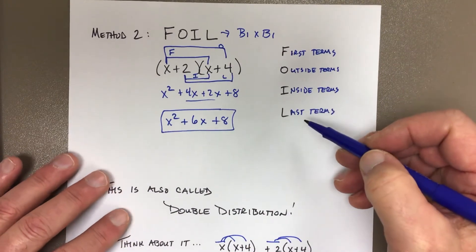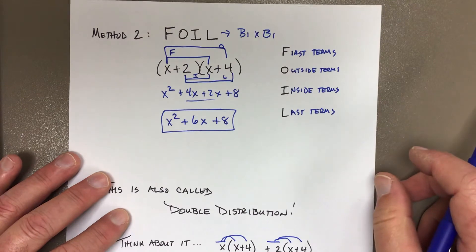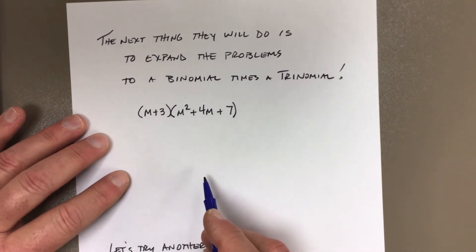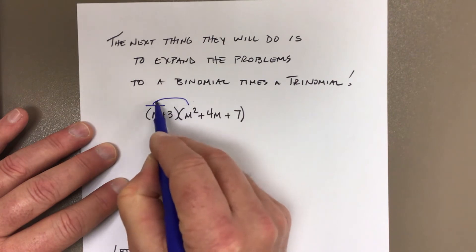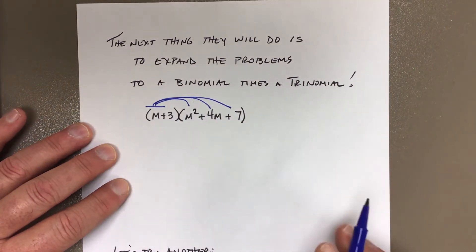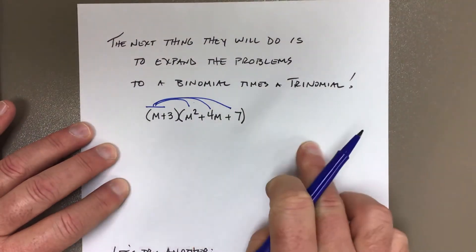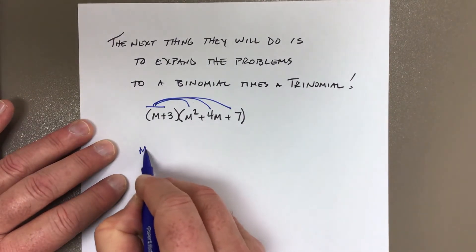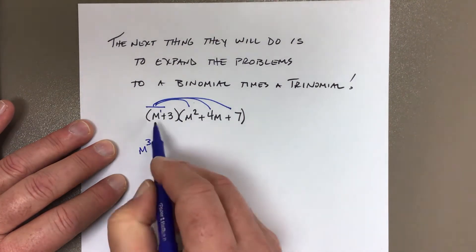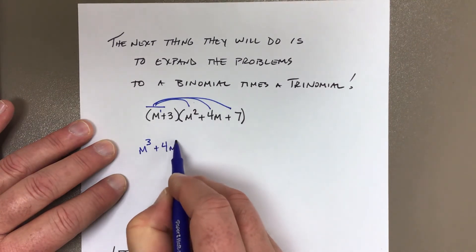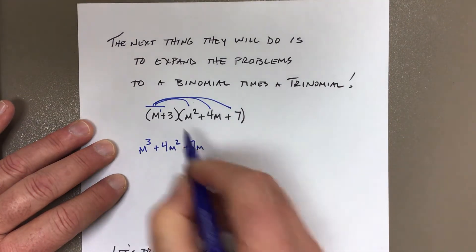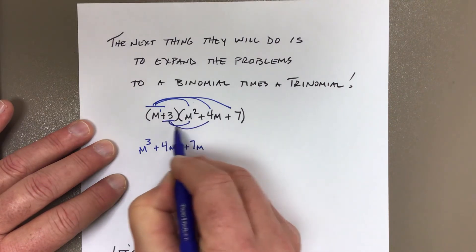You may want to stop, look at that, and grab the homework to keep this fresh. Now, the last thing they're going to have you do is a binomial times a trinomial — this one is definitely double distribution. Take M and multiply it by everybody: M times M squared is M to the third, M times 4M is 4M squared, and M times 7 is 7M. That's the first distribution.